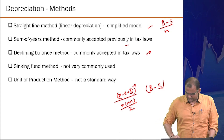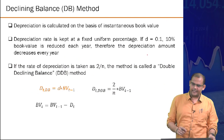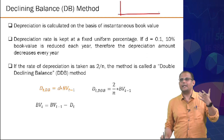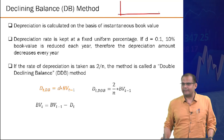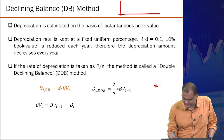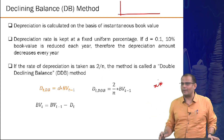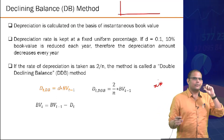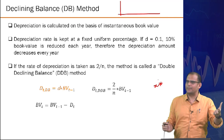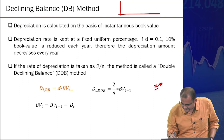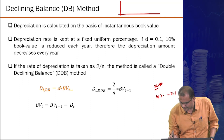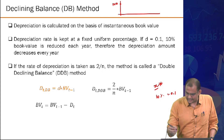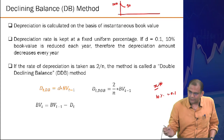The declining balance method: the depreciation amount in a particular year is a fixed fraction x multiplied by the instantaneous book value, not B minus S. For example, if x is 10% and original value is 100, first-year depreciation is 10, so book value at end of year 1 is 90.